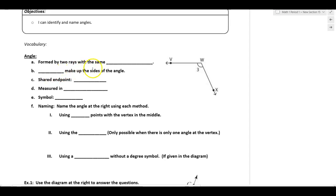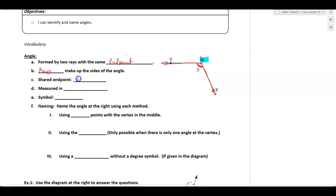An angle is formed by two rays with the same endpoint. When I look at this angle, this little arc tells me that's the angle, and the shared endpoint is W. WV is a ray, and WX is a ray. So that angle is created by two rays with a shared endpoint. The rays make up the sides of the angle, and that shared endpoint is called the vertex.